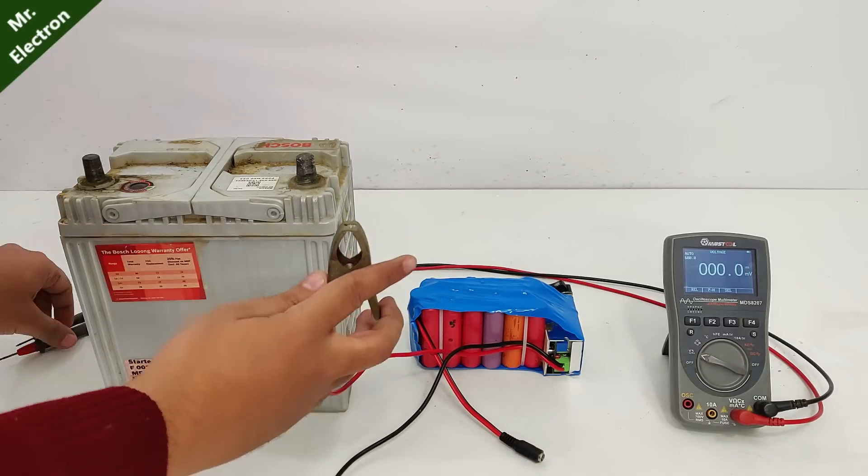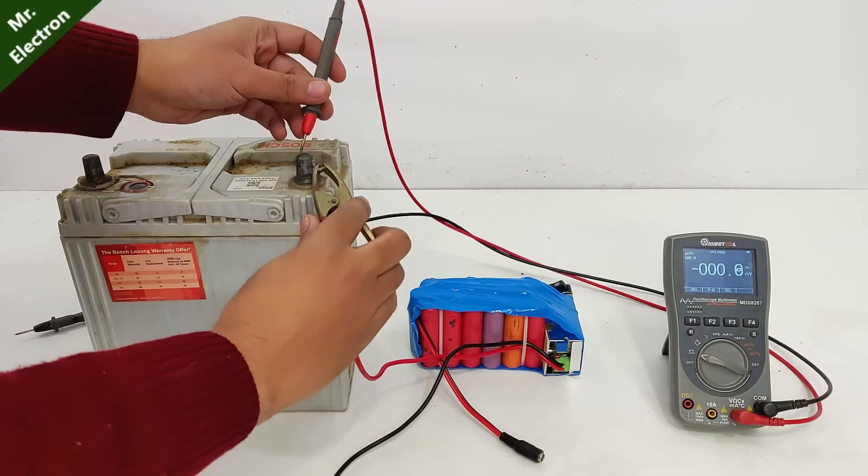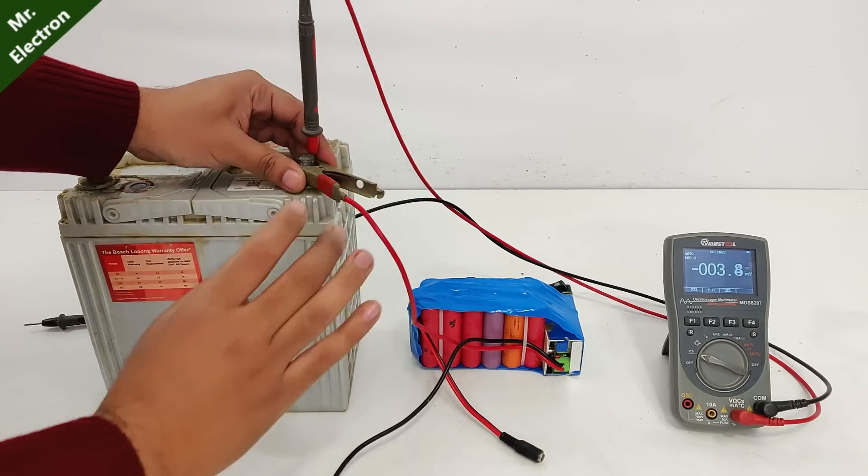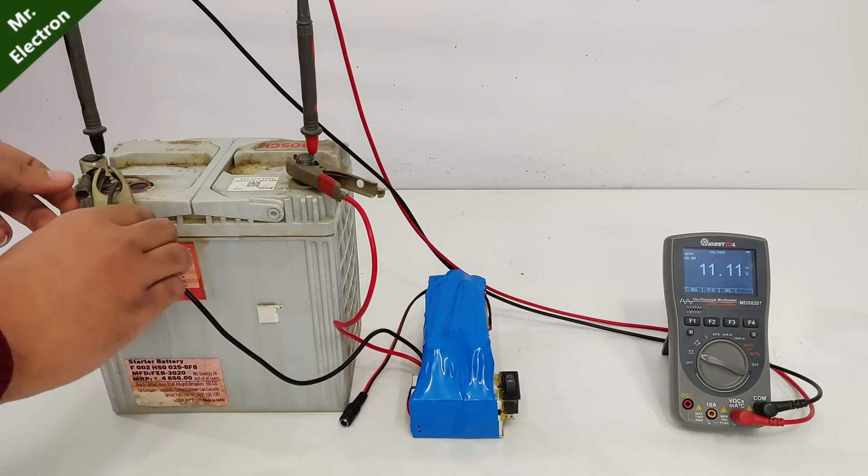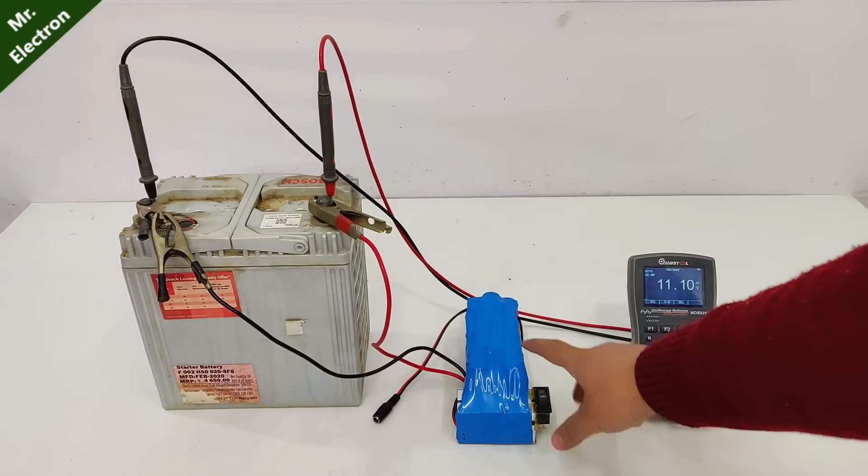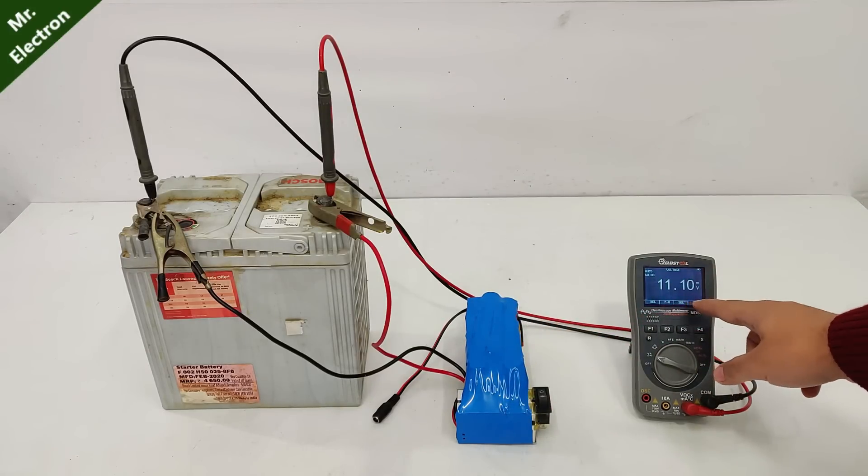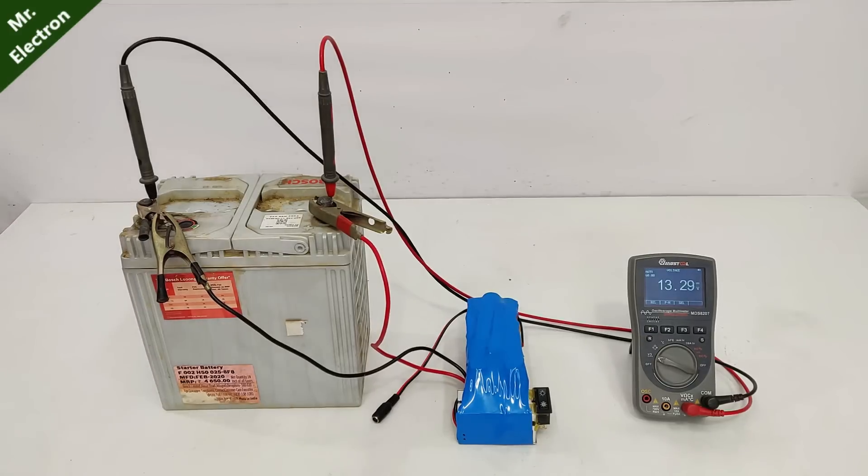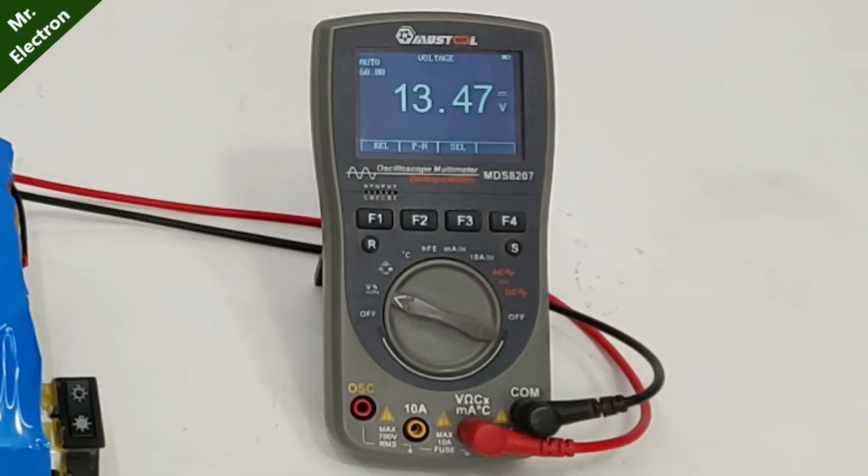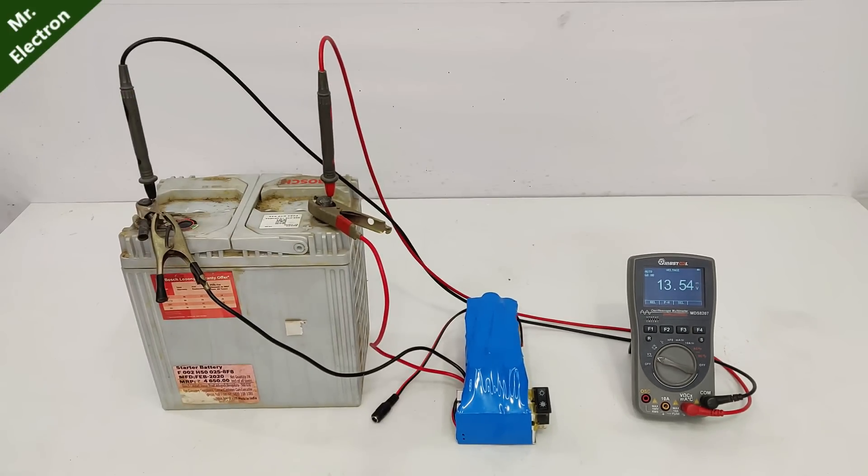So red wire is positive and black is negative. So let's turn on our power bank and you should see the voltage increase on the multimeter. So here as you can see that the battery voltage is rising rapidly. Let's leave it for some time.